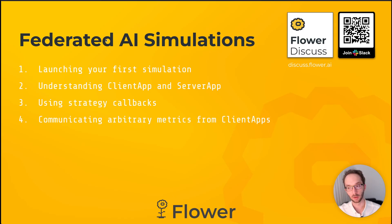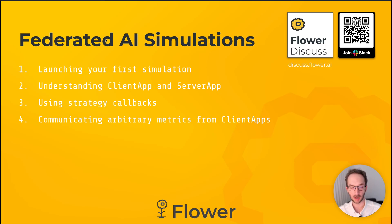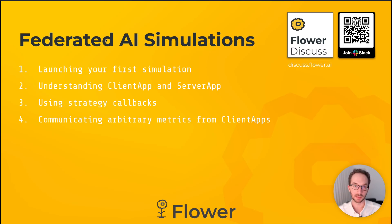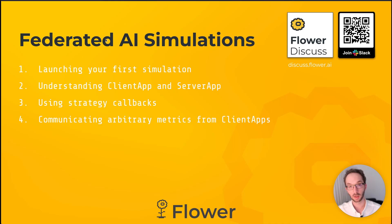In the fourth video you will learn how to communicate arbitrary metrics from the client apps back to the strategy. The client app's role is primarily to do local training of a model sent from the server. Before communicating that model back for aggregation, you sometimes want to send metrics such as training loss, validation accuracy, and other more complex data structures. In this video you will learn how to communicate all of those so you can run the algorithm that suits your use case.